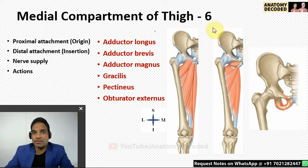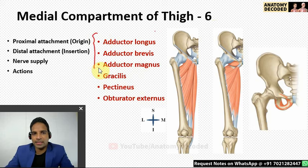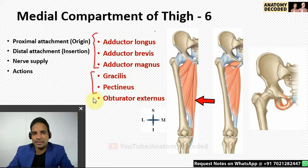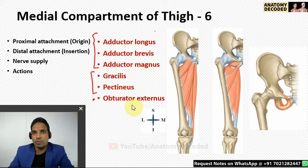Now let's cover the muscles of the medial compartment of the thigh. Here is the list: three muscles remembered together as the adductor group — adductor longus, adductor brevis, and adductor magnus — plus two others: gracilis and pectineus. There is also one deeper muscle: obturator externus.